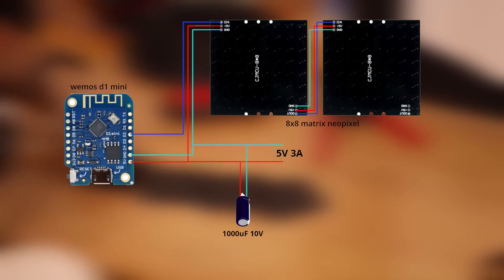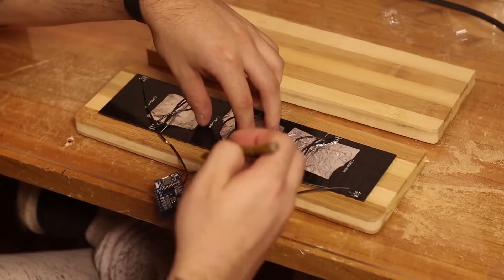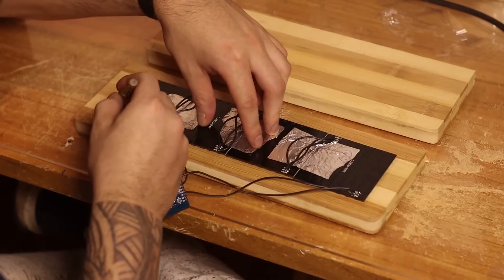As you can see, I followed this connection scheme, which is very simple. I only need the four matrices, a Wemos D1 Mini, which is like an Arduino, and a capacitor.